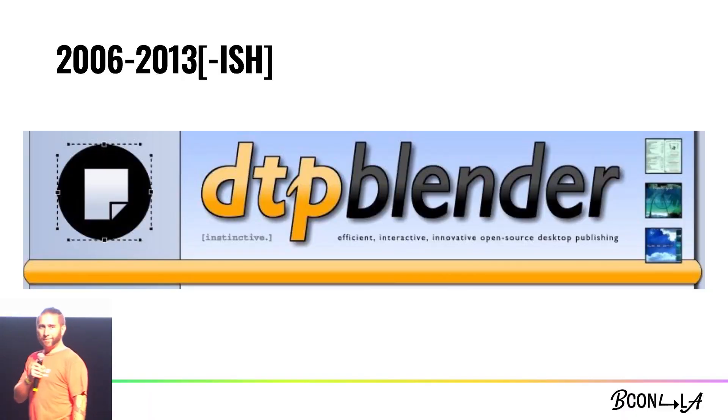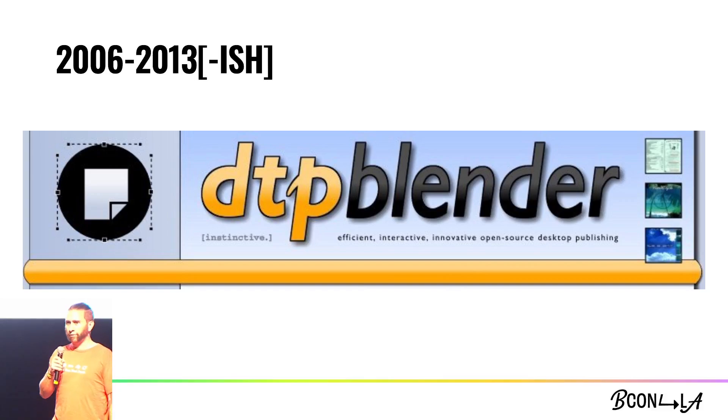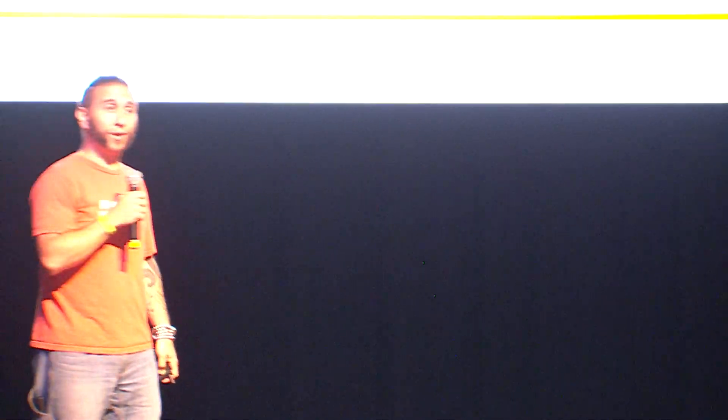One of the other really old ones happened a couple years after Blender went open source. Does anybody remember DTP Blender? It's a fork by Alexander Erwing, otherwise known as N-Turf, famous for the cube with interesting lighting way back in the day. This was a fork of Blender specifically for desktop publishing. It lasted until 2013. Since then there's been other forks — B4Artist, individual forks for render engines, and the Blender app stuff talked about a couple years ago.